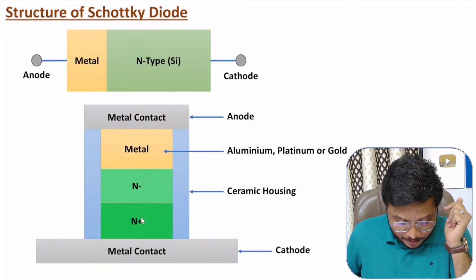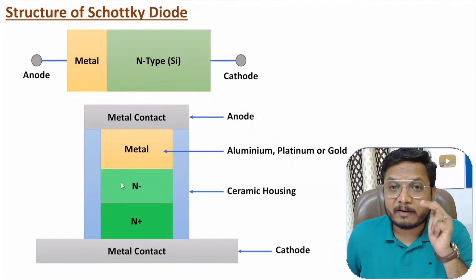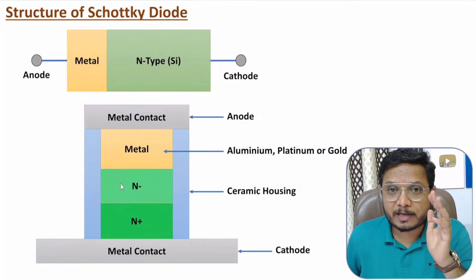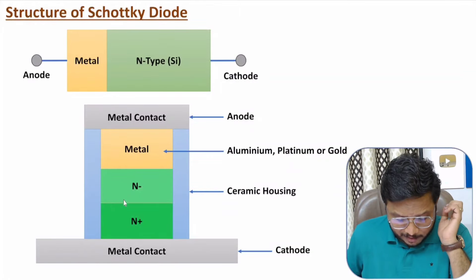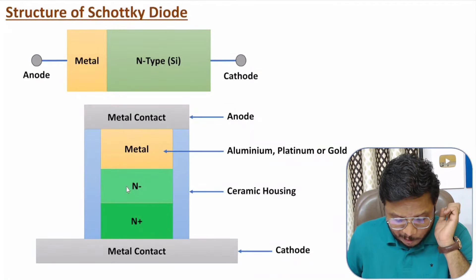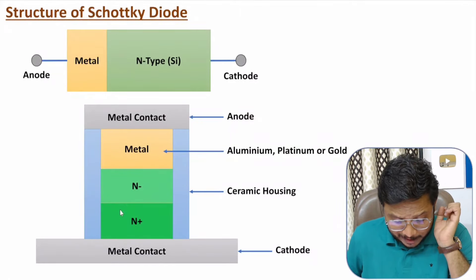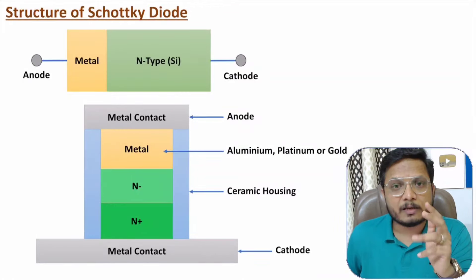With N-plus we have higher doping concentration of electrons, and here with N-minus we have lower doping concentration of electrons. Because of this difference, electron drift in this direction will be very fast. Since N-plus has higher electron concentration and N-minus has lower electron concentration, electrons drift rapidly, resulting in faster electron velocity — which gives the Schottky diode its faster switching characteristics.